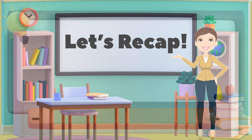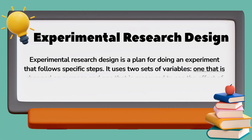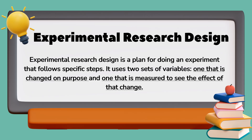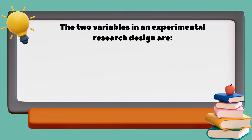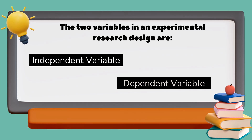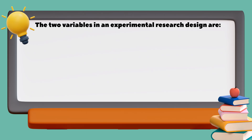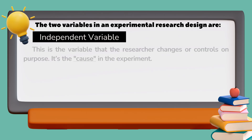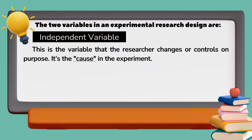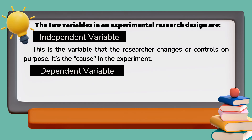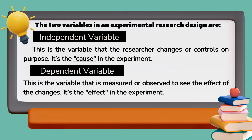Let's recap! Experimental research design is a plan for doing an experiment that follows specific steps. It uses two sets of variables — one that is changed on purpose and one that is measured to see the effect of that change. The independent variable is the variable the researcher changes or controls on purpose; it's the cause in the experiment. The dependent variable is the variable that is measured to see the effect; it's the effect in the experiment.